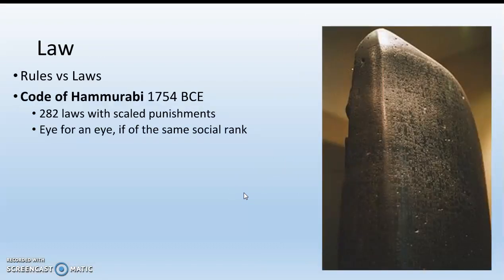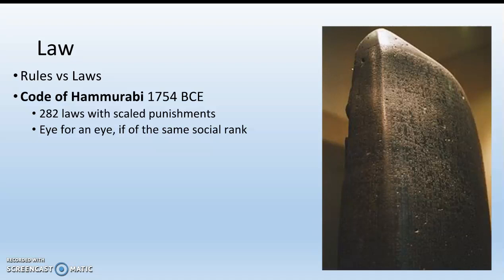Law: we have the first codified — meaning written-down — laws, called the Code of Hammurabi. You probably learned about it in middle school. The Code of Hammurabi was written in 1754 BCE and contains 282 different laws with scaled punishments. Basically it's an eye for an eye if the parties are of the same social rank. If you're rich and you kill a rich person's son, that person gets to kill your son; but if you're rich and kill a poor person's son, you probably just pay a fine. It's not very fair, but at least it's written down and there are rules.